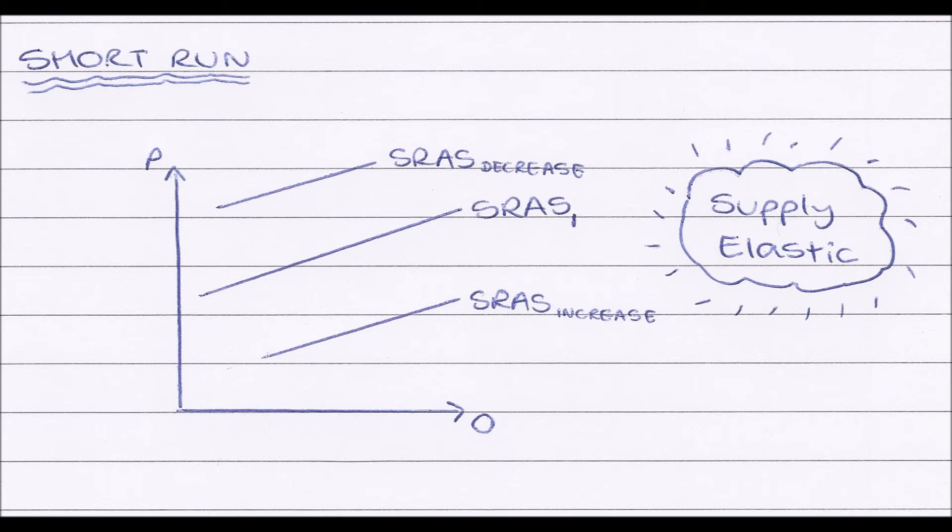And just with a supply curve, when we have a decrease in aggregate supply, or short run aggregate supply, our curve shifts up. When we have an increase in short run aggregate supply, our supply curve shifts down.